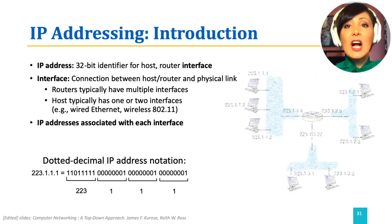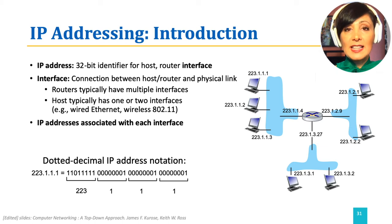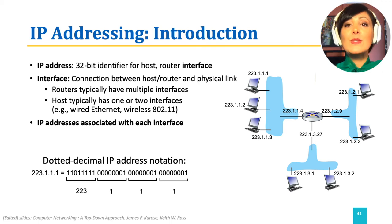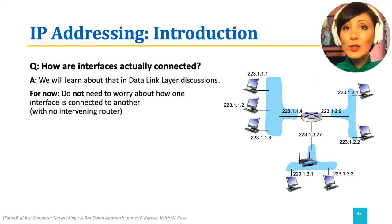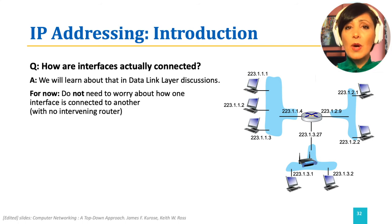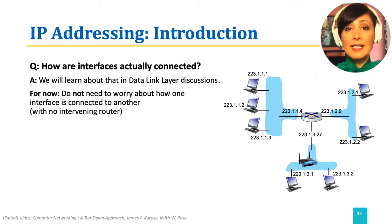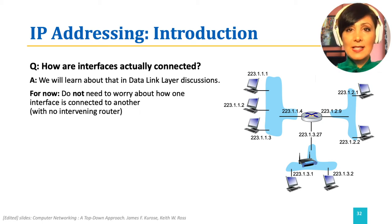IP addresses are assigned to the interface connecting the endpoint to the network, and that endpoint would be identified uniquely in the network using the assigned IP address. A valid question you might ask at this point is how are the interfaces actually connected to the links? We might have different types of links — for example, in the very broad sense, wired or wireless. And to have an interface with those links, different protocols will run at the data link layer. We will discuss this in details in the data link layer discussions. For now, we will use interface as an abstraction of the boundary between the link and the endpoint.